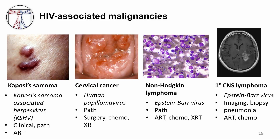The immunosuppression induced by HIV and AIDS also increases the incidence of certain malignancies. Kaposi's sarcoma is associated with Kaposi's sarcoma-associated herpesvirus, or KSHV. These characteristic violaceous plaques occur on the skin and can also occur viscerally in the lungs and other organs. The most effective therapy for Kaposi's sarcoma is antiretroviral therapy, although chemotherapy such as liposomal doxorubicin can be administered for amelioration prior to ART.